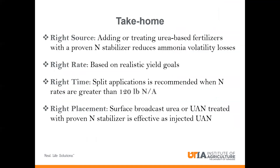For takeaways, focus on the 4Rs: use the right source — if using urea-based fertilizer, treat it with a nitrogen stabilizer. Base your application on realistic yield goals, and when putting out more than 120 pounds of nitrogen per acre, split apply that nitrogen. If surface applying urea-based fertilizer, treat it with a proven nitrogen stabilizer, unless you are injecting the fertilizer or there is a forecast of rainfall right after application.